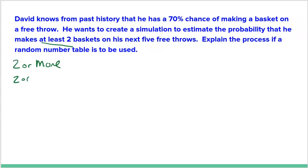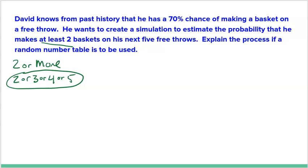He could shoot five free throws and record whether he made at least two. If he made two, three, four, or five — that's a success. If he only makes zero or one, that's a failure. He could do this over and over again, and the probability would be how many times he was successful divided by how many trials he ran.